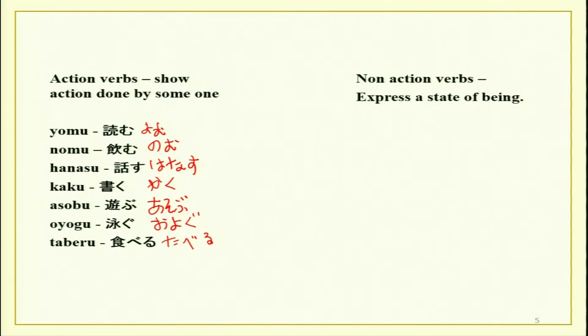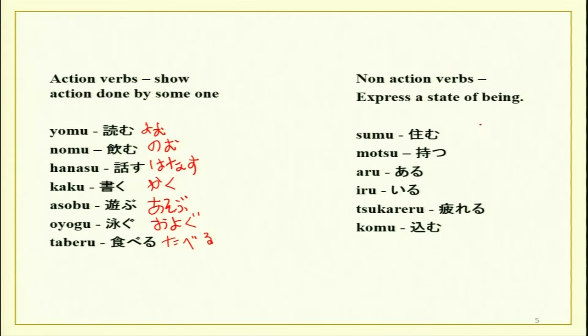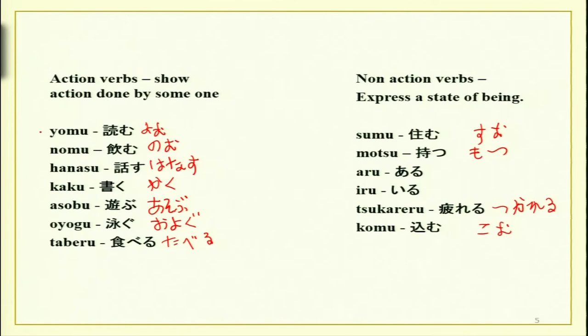The non-action verbs express a state of being — some state that you are actually living or are in. These include sumu, motsu, aru, iru, tsukareru, and komu. Sumu means to live, motsu means to have or possess, tsukareru means to be tired as you already know, and komu means to be crowded. You already know all these verbs.